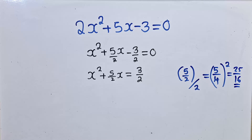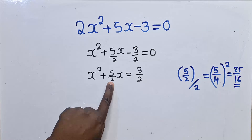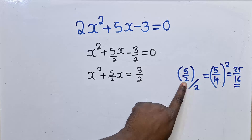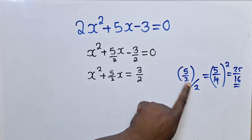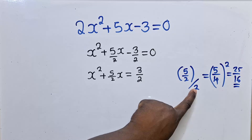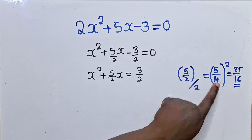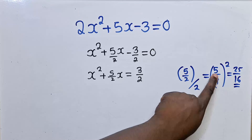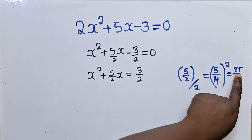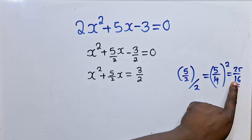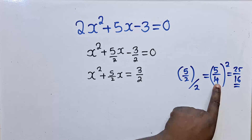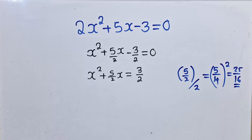Let me run you through again. Get whatever coefficient is here, write it, and divide by two. When you divide 5/2 by two, since this is a fraction it will give us 5/4. Five over four to the power two will be 25/16, because five squared gives us 25 and four squared gives us 16.